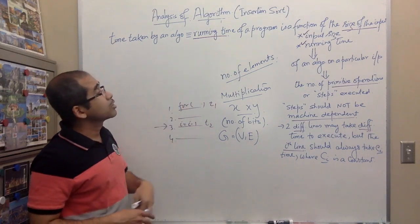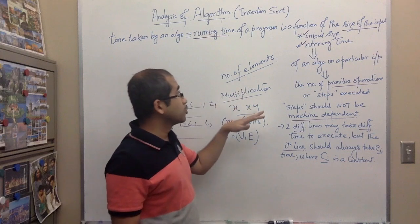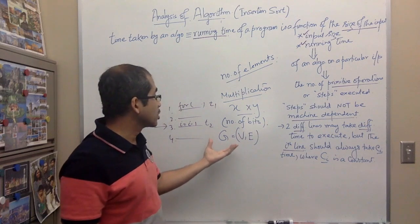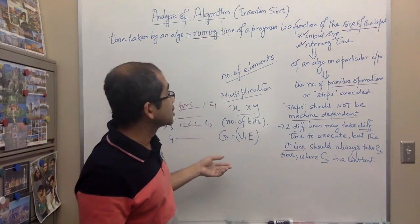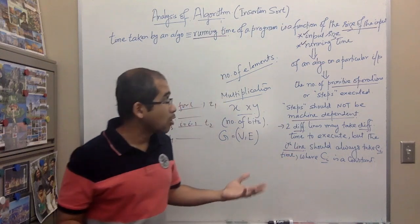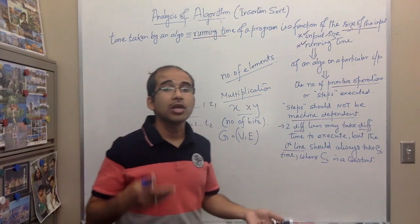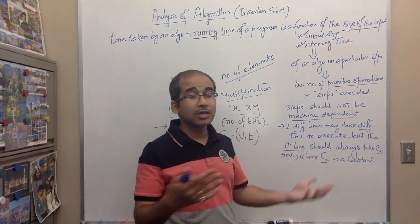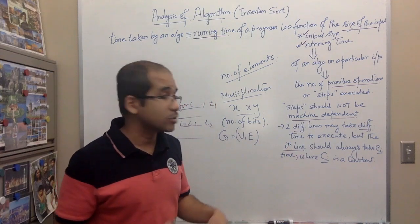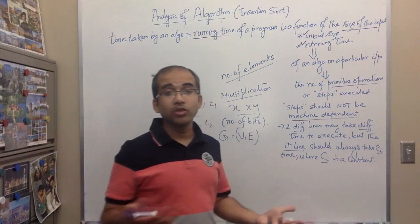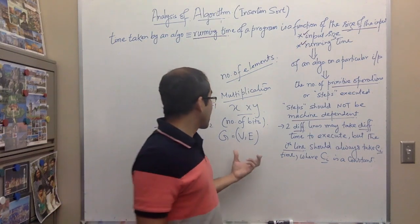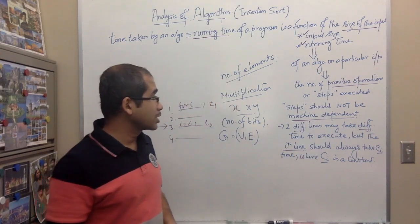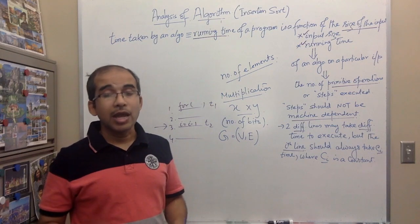To summarize the two key concepts in algorithm analysis: first is the size of the input, which can be the number of elements, the number of bits, or different sets of elements depending on the problem. Second is the running time, which is the count of steps or primitive operations required to execute the algorithm. Each step takes a constant amount of time, and that time must be machine independent.